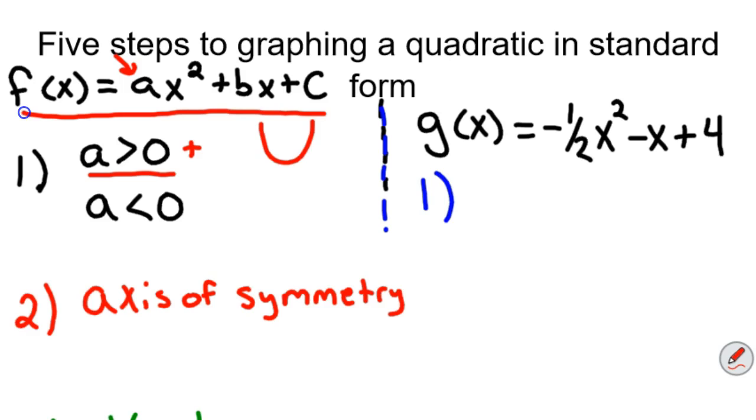Sometimes I'll say that graph is happy because a is positive. If a is less than zero, which means it's negative, the graph opens down or I might say it's sad. So in our case, we know that a is equal to negative one-half in this case, so it's this first term. And it's negative, it's less than zero, so we know this opens down or it's a sad graph.